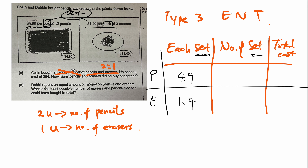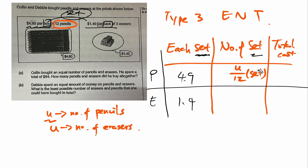Back to the question. Equal number means 1 to 1. The question says one set is 12 pencils, and you have U number of pencils. So the number of sets is U divided by 12. This U divided by 12 is the number of sets, because U is the number of pencils — but here I need the number of sets, so I divide by 12 to get the number of sets.